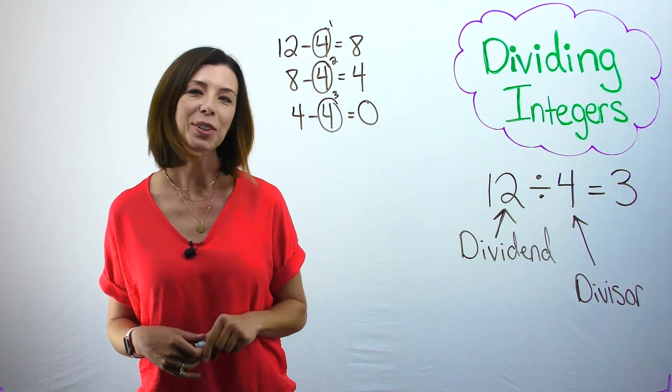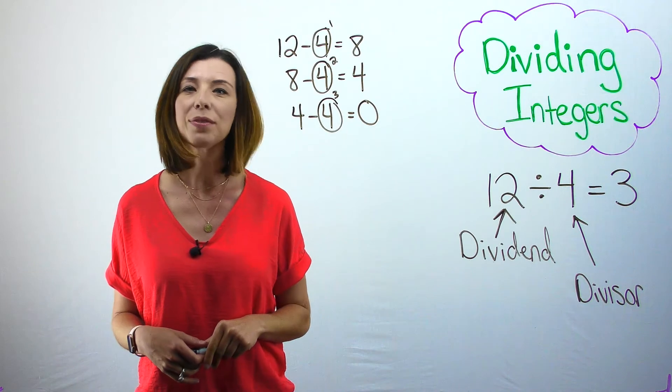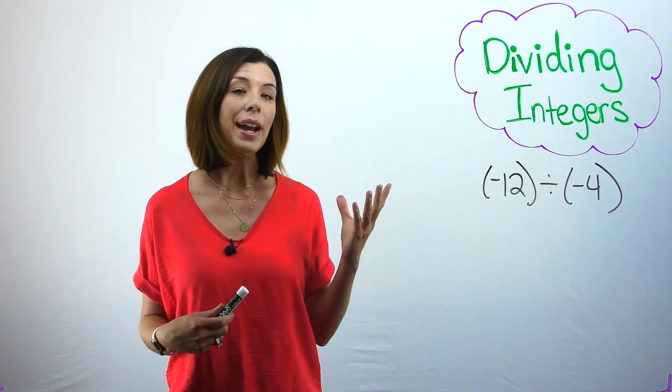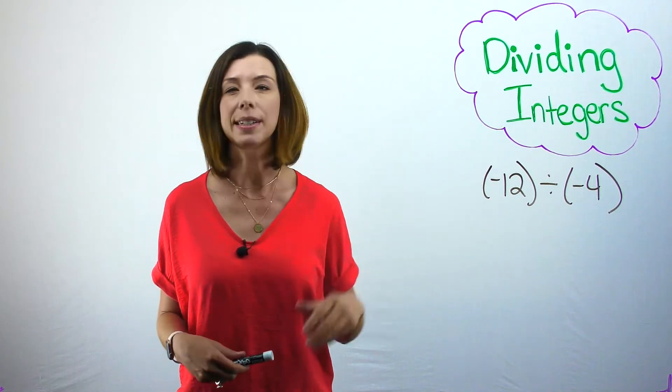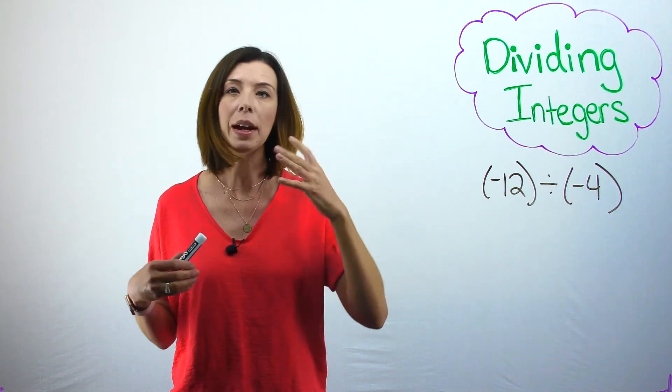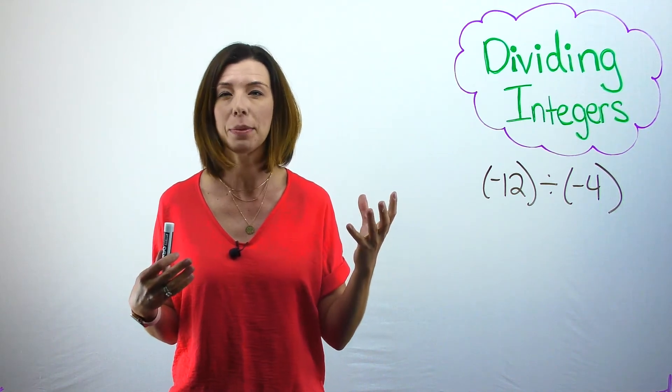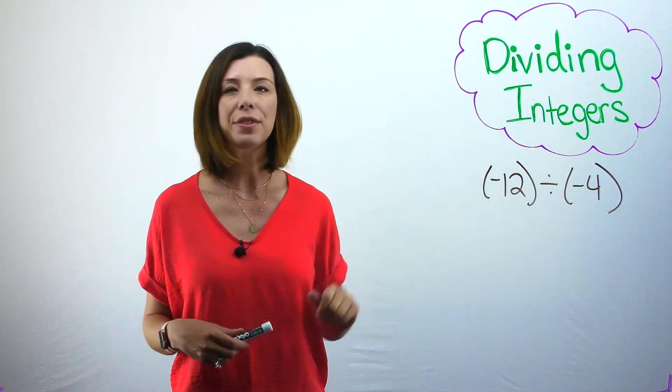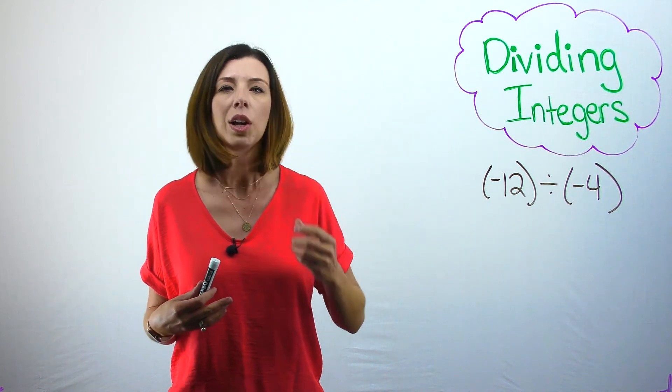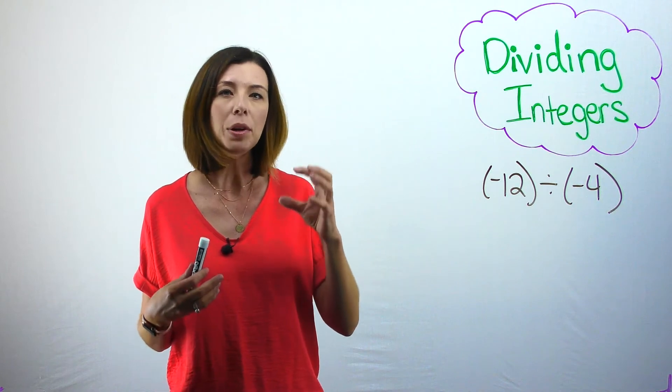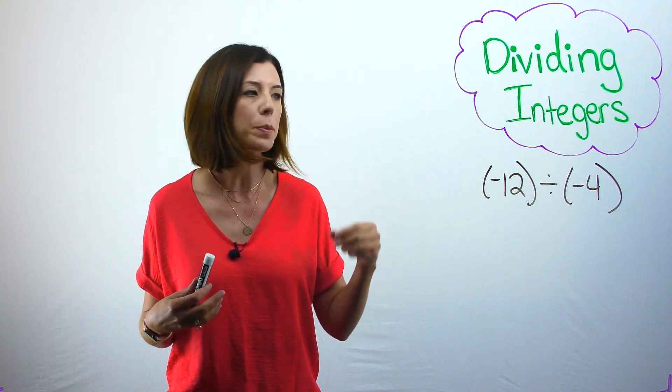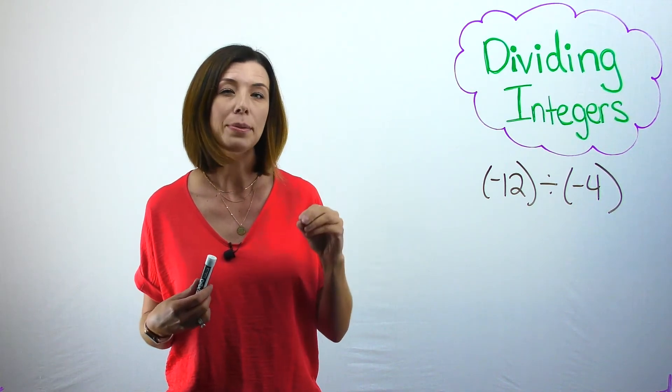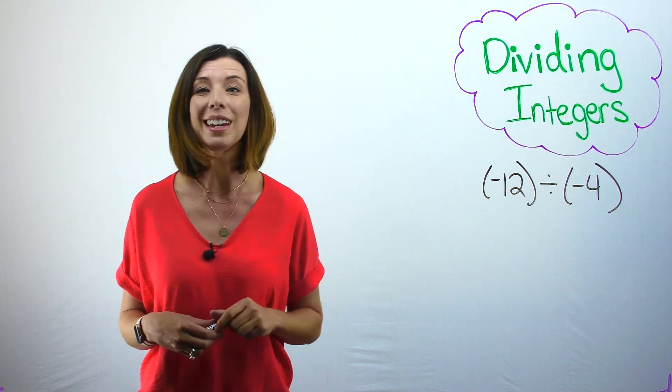Now let's make this a little trickier. Let's do negative 12 divided by negative 4. Right away, I notice that my dividend is negative 12. So I'm envisioning that I'm going to have 12 negative integer chips on the board. I'm going to show you that in just a minute. I want to focus on my divisor here, which is negative 4. So that means that I'm going to be putting into some number of groups 4 negative chips at a time. Let's show this with the integer chips.